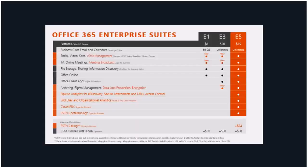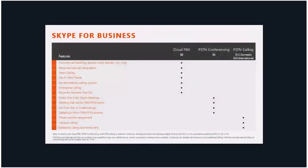We get the entire E5 suite for $35. If a customer wants to add the PSTN calling feature, it's $24 a month for an international plan, and in the small print it's $12 a month for a US-only plan. So it's either $12 or $24 a month additional on top of the $35.